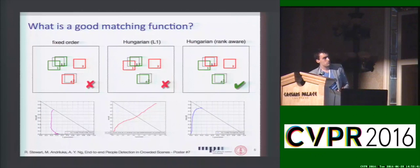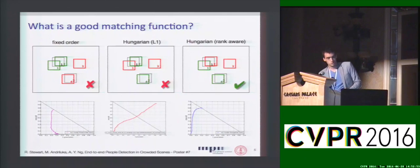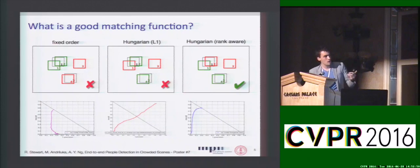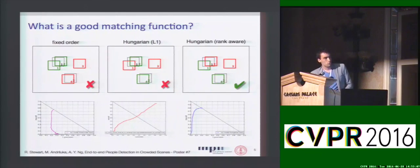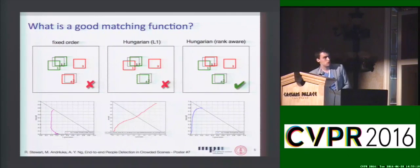We look at three different options. The first forces predictions left to right, top to bottom, but the problem is that sometimes good detections get penalized. Another option is to take only the detections closest to the ground truth and reinforce those — but this loses any notion of order. We really want a network that outputs the first correct proposal, then the second, and stops. So we introduce a new loss function that takes both order and proximity into account.